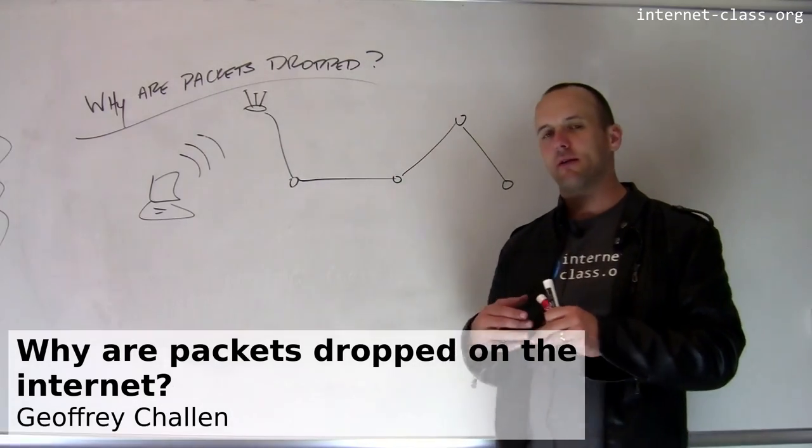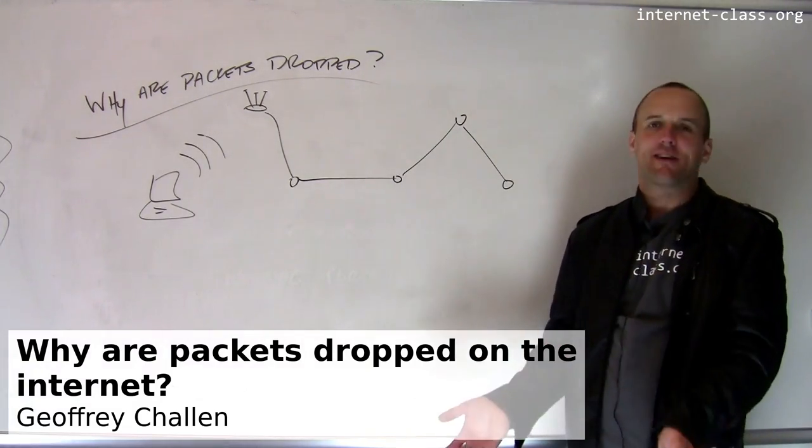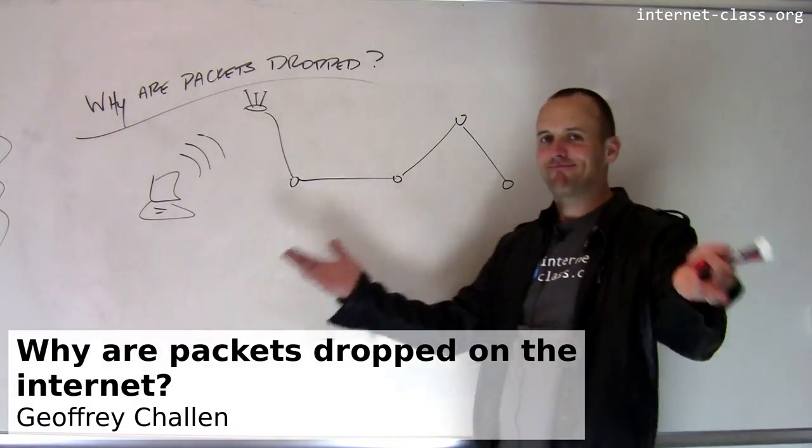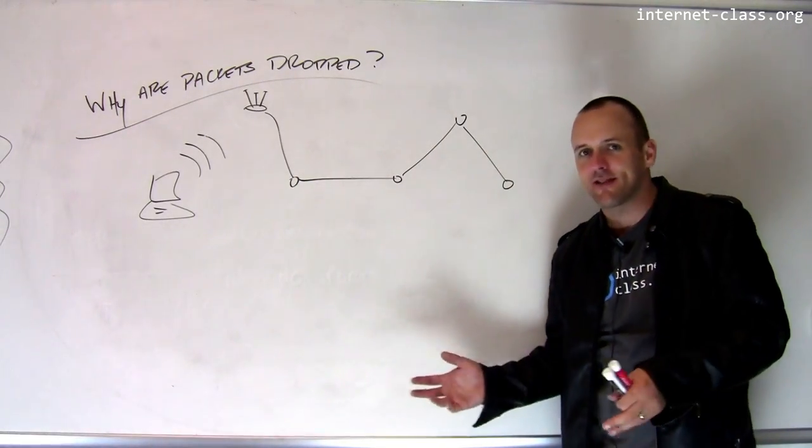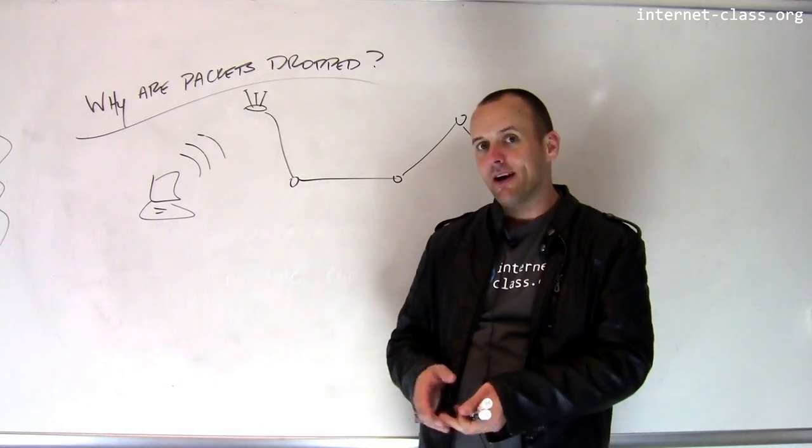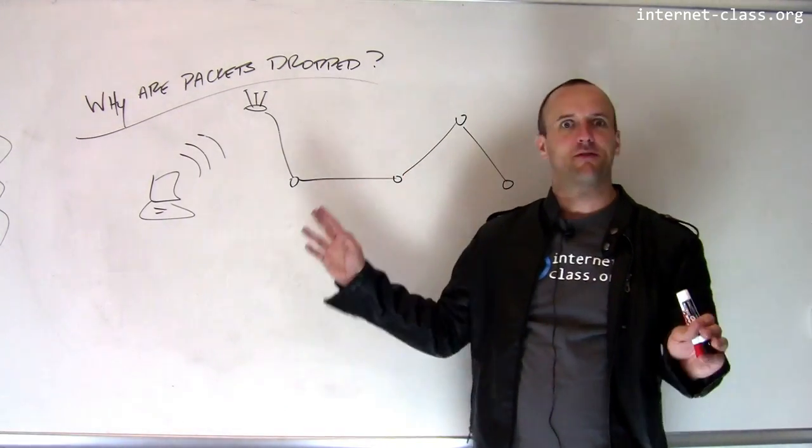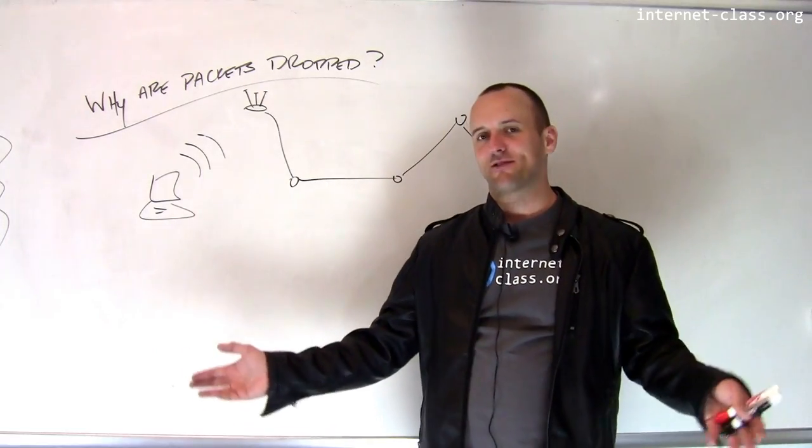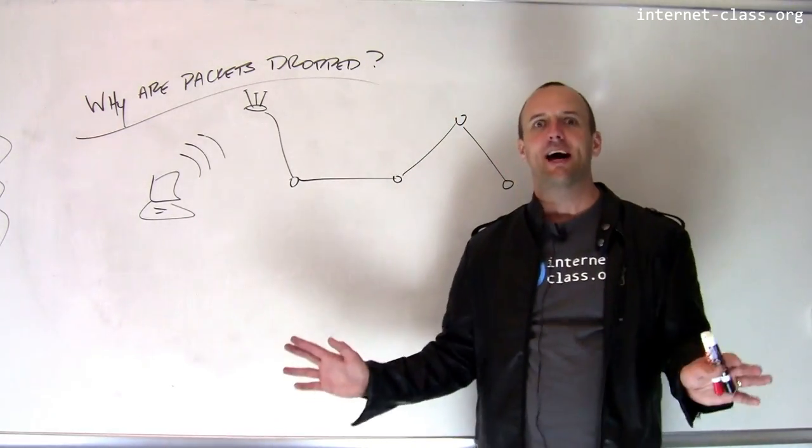TCP was built to try to make the Internet more reliable. But there's this interesting question: why are packets dropped at all? Why are they dropped? Where are they dropped? What causes this? And there's also some modern questions about whether TCP is responding the right way. But let's talk about this fundamental mystery of the Internet. Why are packets dropped? I send a packet from point A and it never arrives at point B. What happened to it along the way?